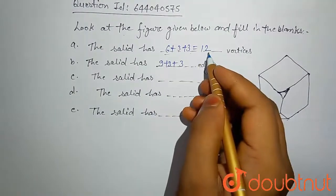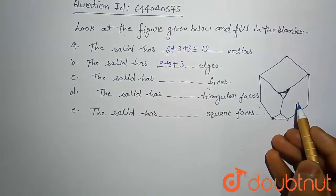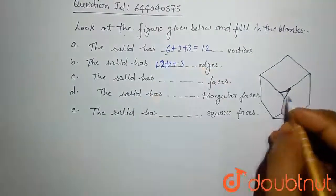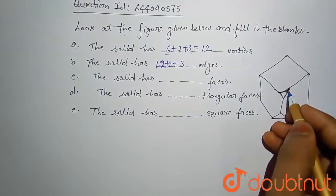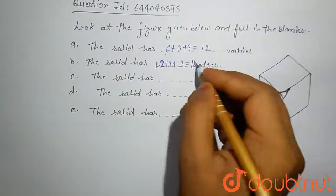And number of edges in a cube is 12, then 12 plus three edges of this triangle, three edges of this triangle, then total is 18 edges.